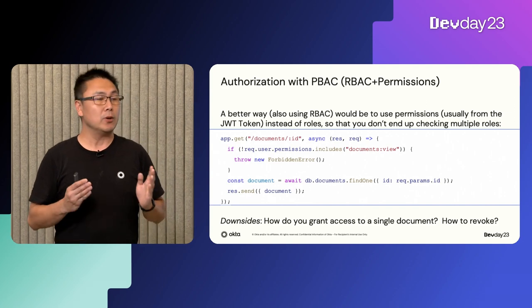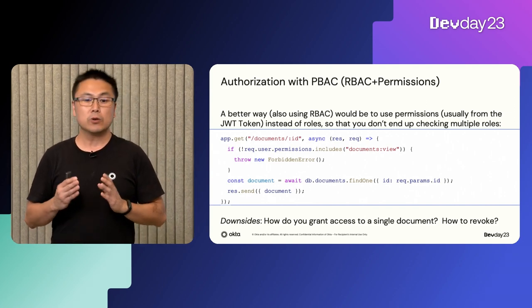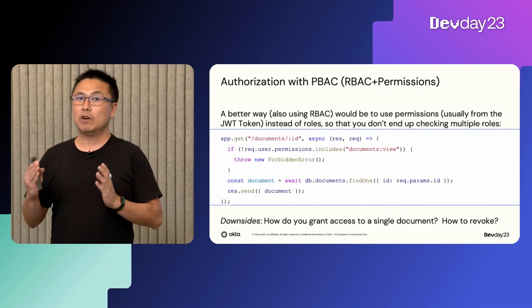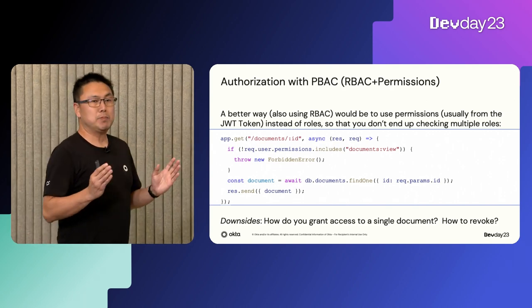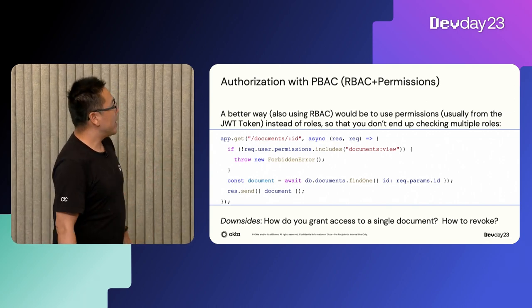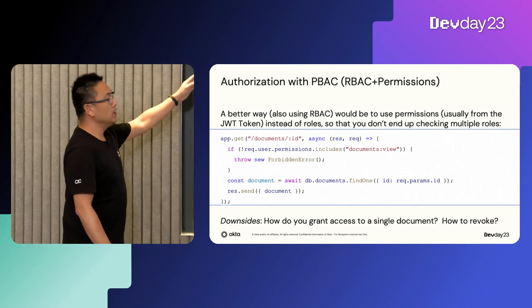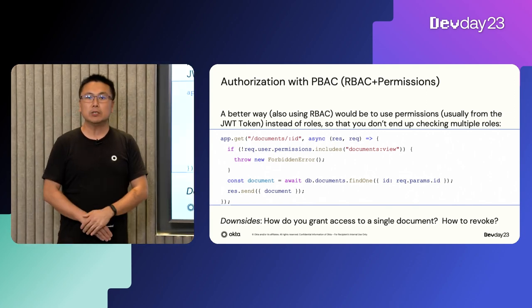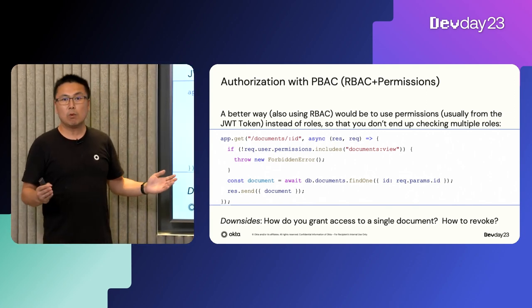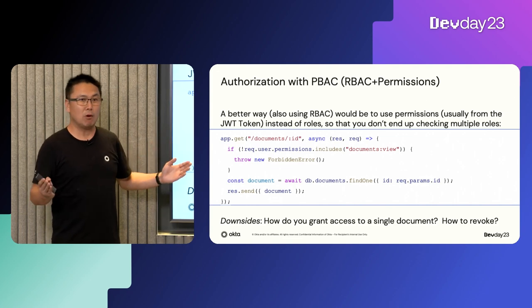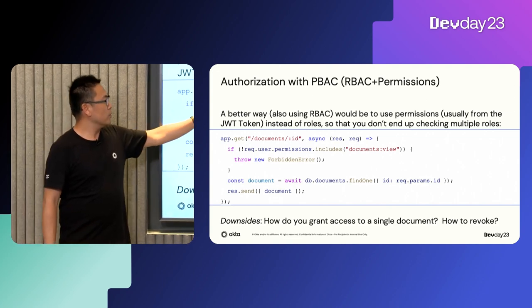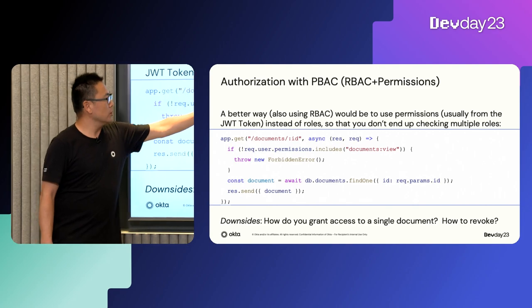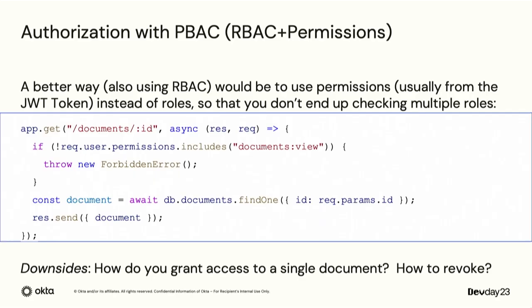Another possibility is to use RBAC with permissions. Instead of specifying a role, you specify the permission in the JWT token. This works well — if you have many roles, you just need one line that says: if the user permission includes document viewer, everything will be good.